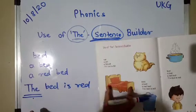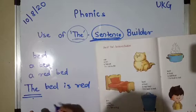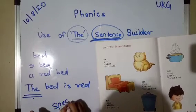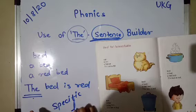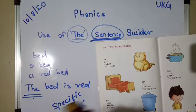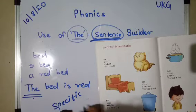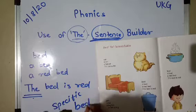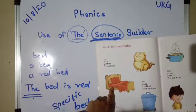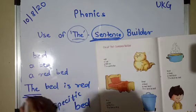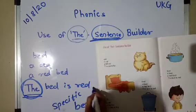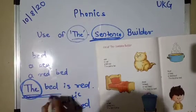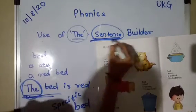When we talk about this specific bed, we use 'the'. So: 'this bed is red', so we say 'the bed is red', because we are going to make a sentence about a specific bed.